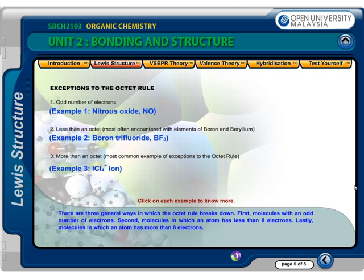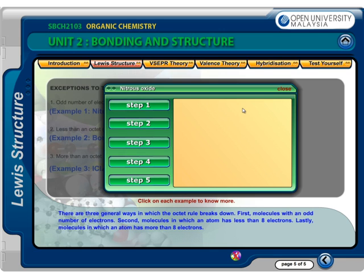There are 3 general ways in which the octet rule breaks down: first, molecules with an odd number of electrons; second, molecules in which an atom has less than 8 electrons. Let's look at some examples of Lewis structures when the atom has less than 8 electrons — an exception to the octet rule.